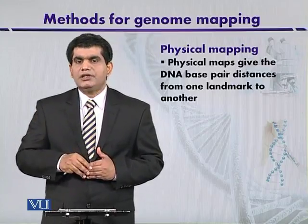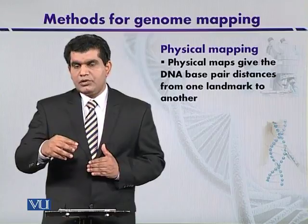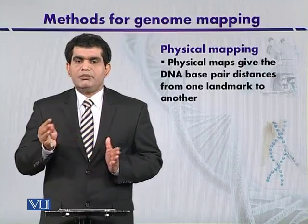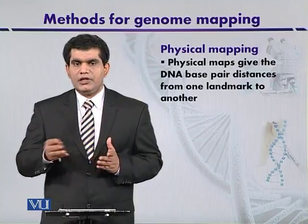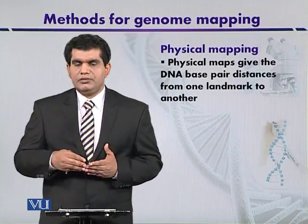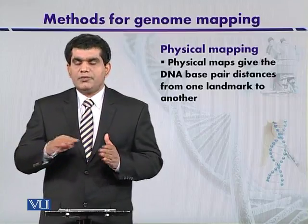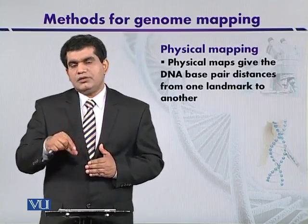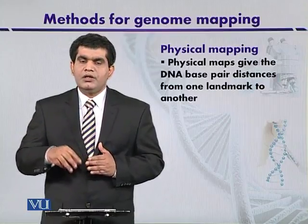Different types of mapping techniques are available for physical maps. Any clone within a genomic library can act as a starting point. For example, genomic DNA can be digested and recombined into vector molecules such as plasmids, bacteriophages, M13 vectors, and cosmids to develop a genomic library.